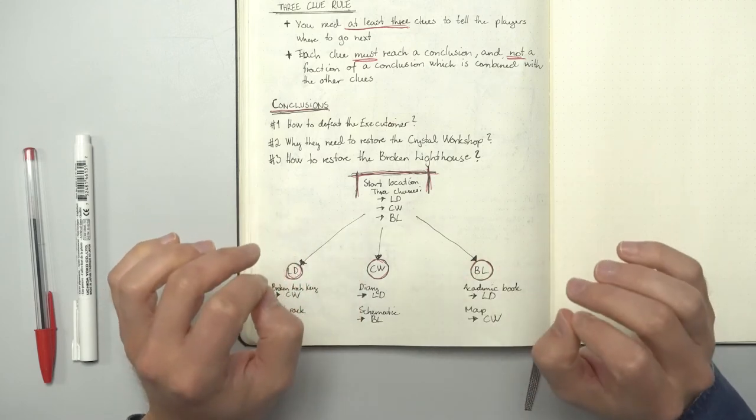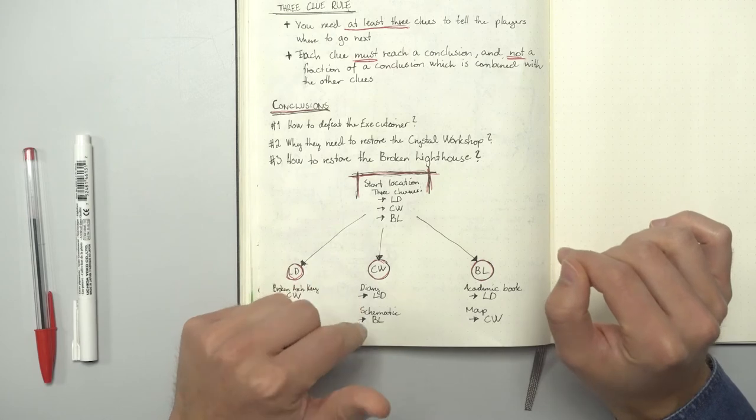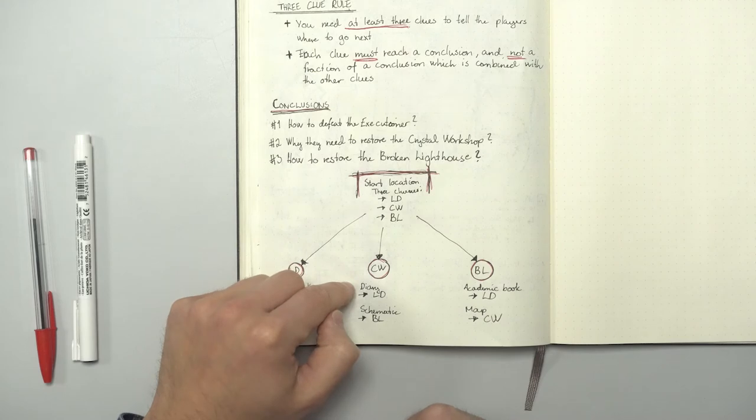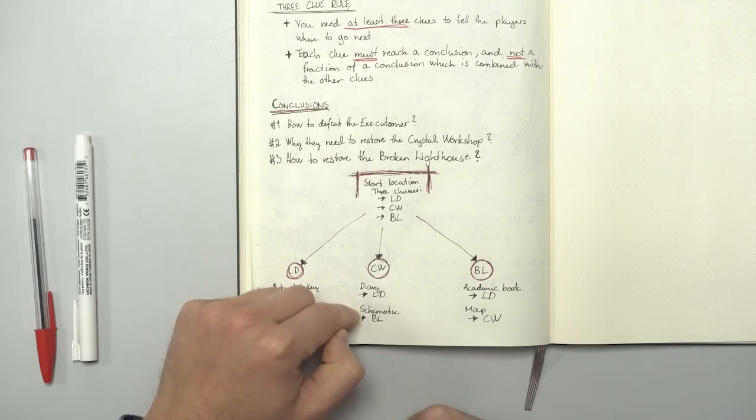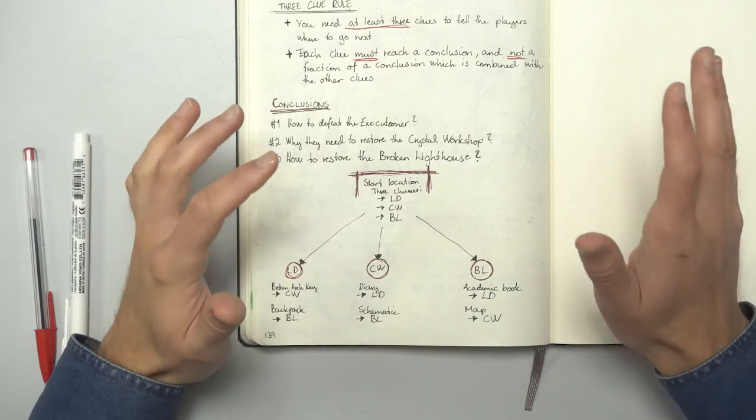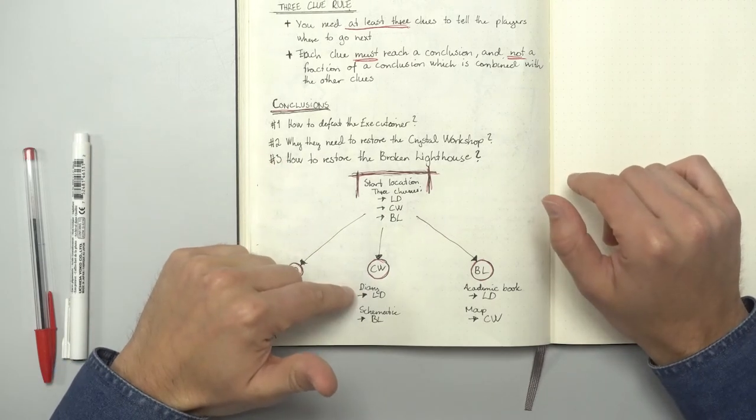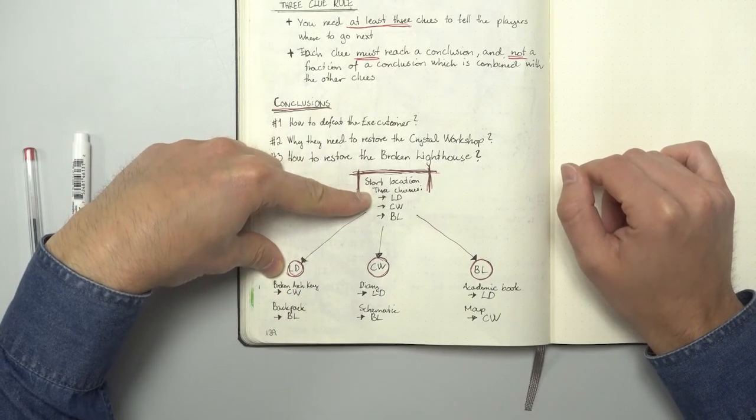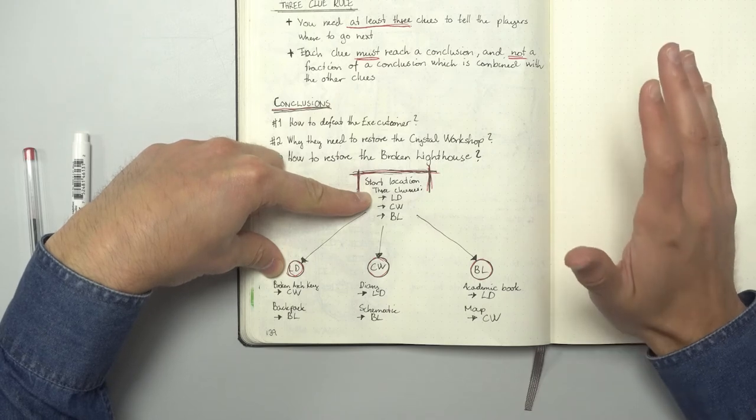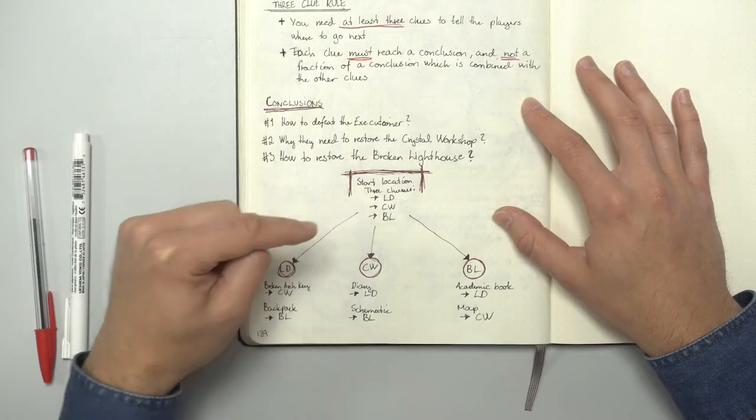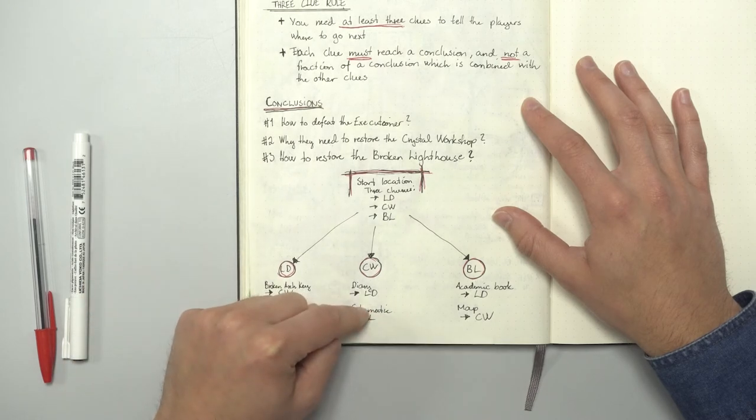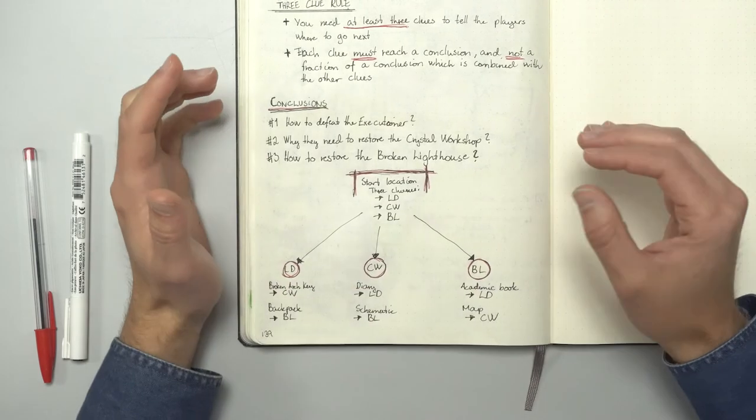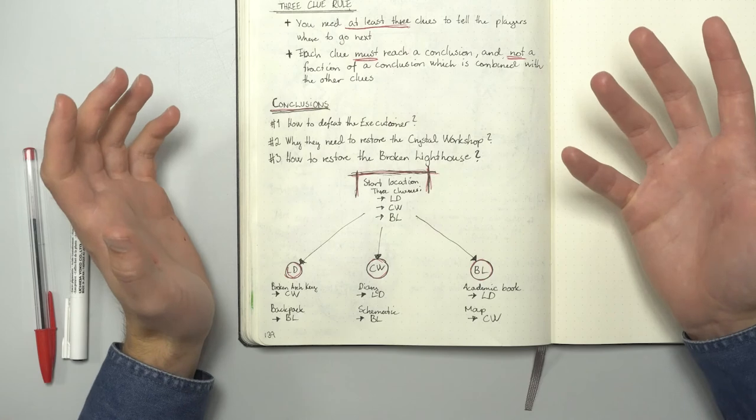And let's assume that the conclusion is to go to the workshop and try to restore it. Here they encounter two new clues. The diary of the human executioner and a schematic to create a large portal. The diary is useless since they've already dealt with the executioner. And the two clues leading to the crystal workshop are spent. Which leaves us with three clues. The clue from the starting location. The backpack and the schematic. All leading to how to unbreak the lighthouse. And this is how to make a node based three clue rule setup.